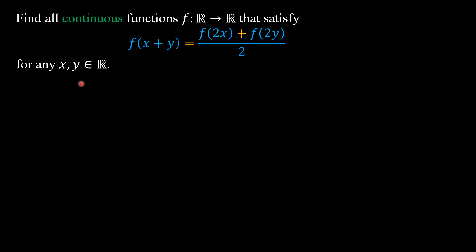First, if we let x be any real number and y equals 0, then we have f(x) equals f(2x) plus f(0) over 2, and we can write f(2x) over 2 as f(x) minus f(0) over 2.